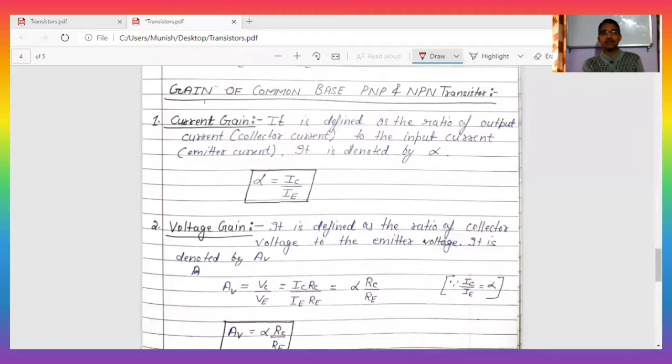These are basically definitions about gain. How much current gain, how much voltage gain, how much power you will get. You have to keep in mind that whether it's PNP or NPN, for common base the formulas remain the same for both.